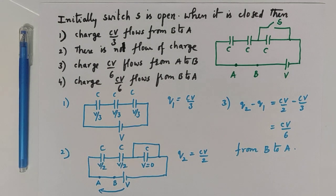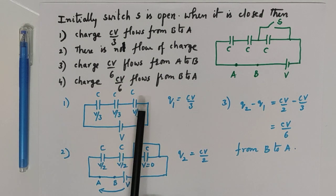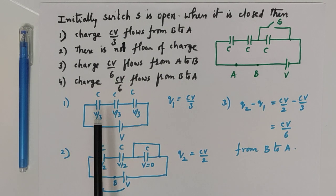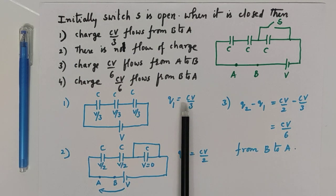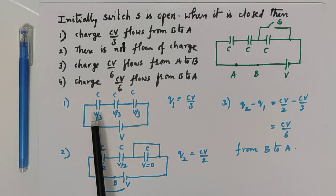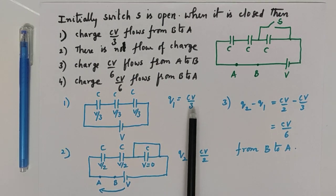When the switch S is open, all three capacitors are in series combination. Since all three are identical, potential difference across each capacitance is V by 3. Charge on each capacitor is the same. So charge on each capacitor Q is equal to CV. C into potential across each capacitance is V by 3, so charge on each capacitance is CV by 3.